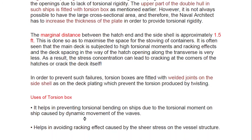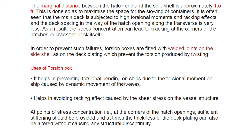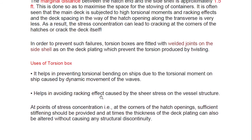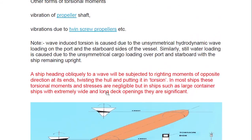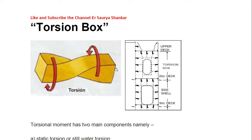The uses of the torsion box include: preventing torsional bending caused by dynamic wave movement; avoiding the raking effect caused by shear stress on the vessel structure; and addressing stress concentration at the corners of hatch openings. Sufficient stiffening is provided, and the thickness of the deck plating can also be altered without causing any structural discontinuity. In summary, the torsion box is clear in terms of its definition, placement, extent, design, construction, forces it resists, and why it is provided in container ships.